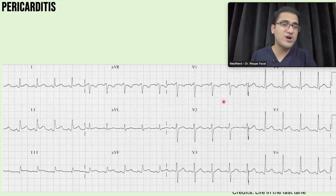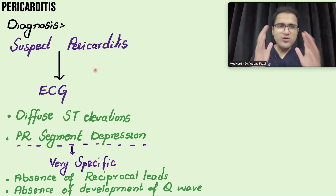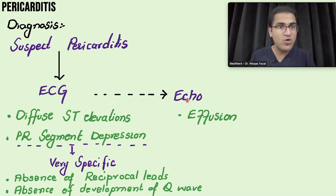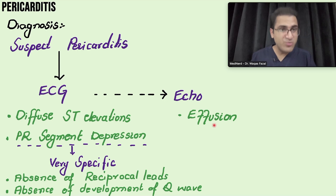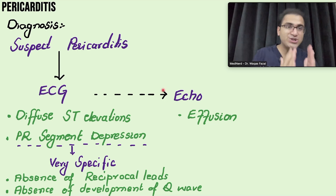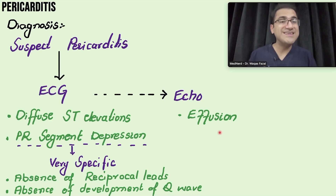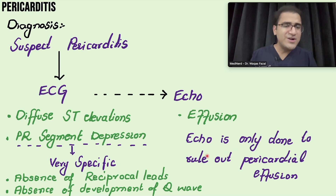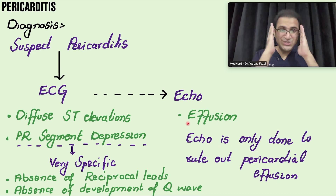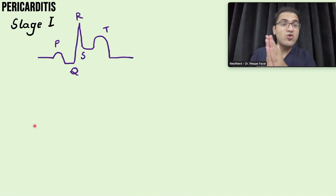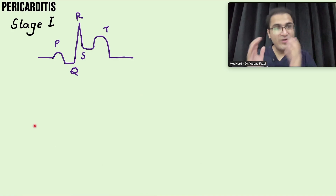After ECG, perform echocardiography to rule out pericardial effusion and cardiac tamponade, as inflammation of the pericardium can produce purulent fluid accumulating around the heart. Remember, ECG is the main investigation in pericarditis; echo is done only to rule out effusion.